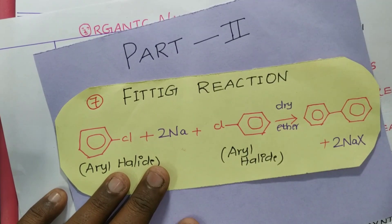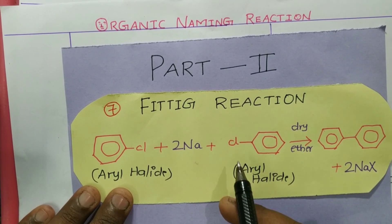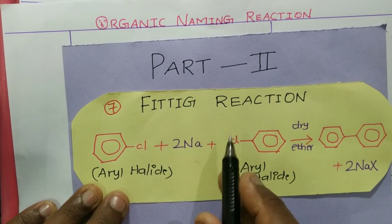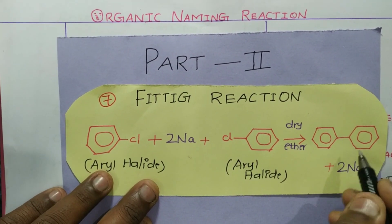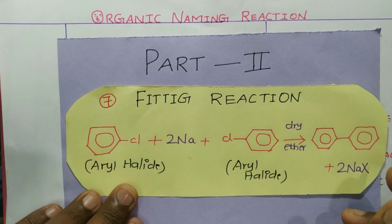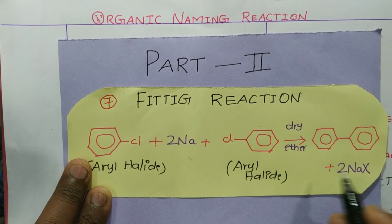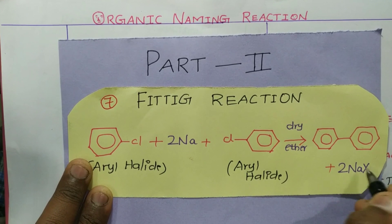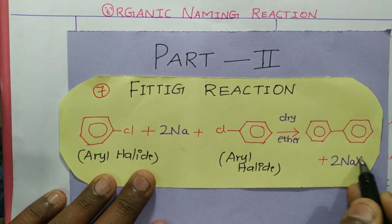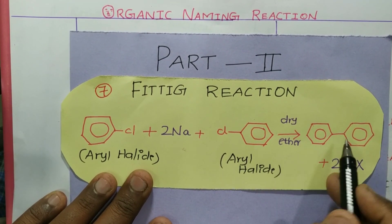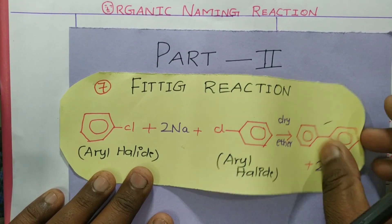Next is the Fittig reaction. It is similar to the Wurtz reaction, but here two aryl halides are involved. Two aryl halides react with sodium in the presence of dry ether to give the product, with the evolution of two molecules of sodium salt. We use dry ether because the sodium halide formed is insoluble in dry ether, preventing the reverse reaction and stabilizing the product.